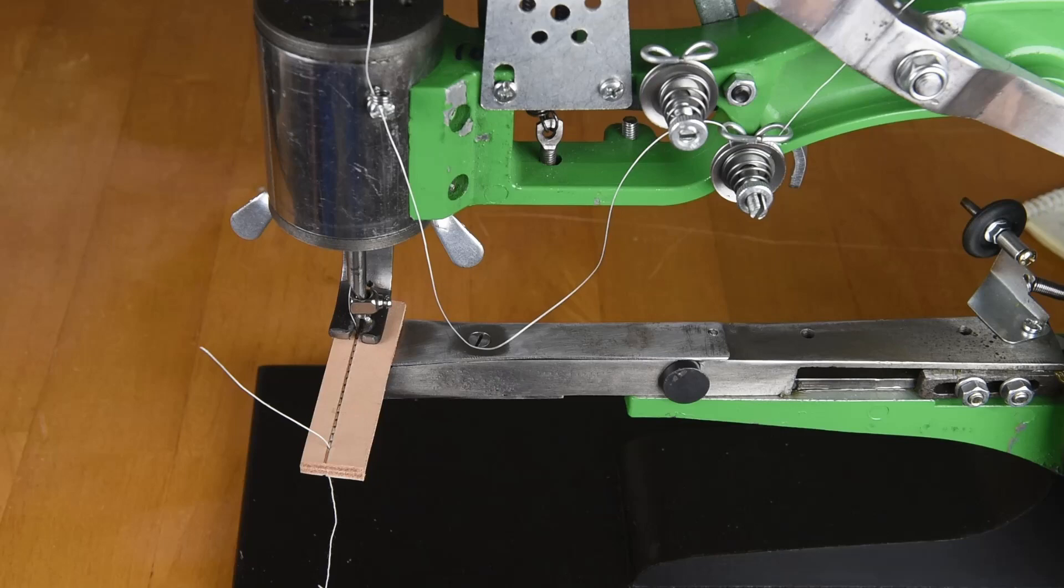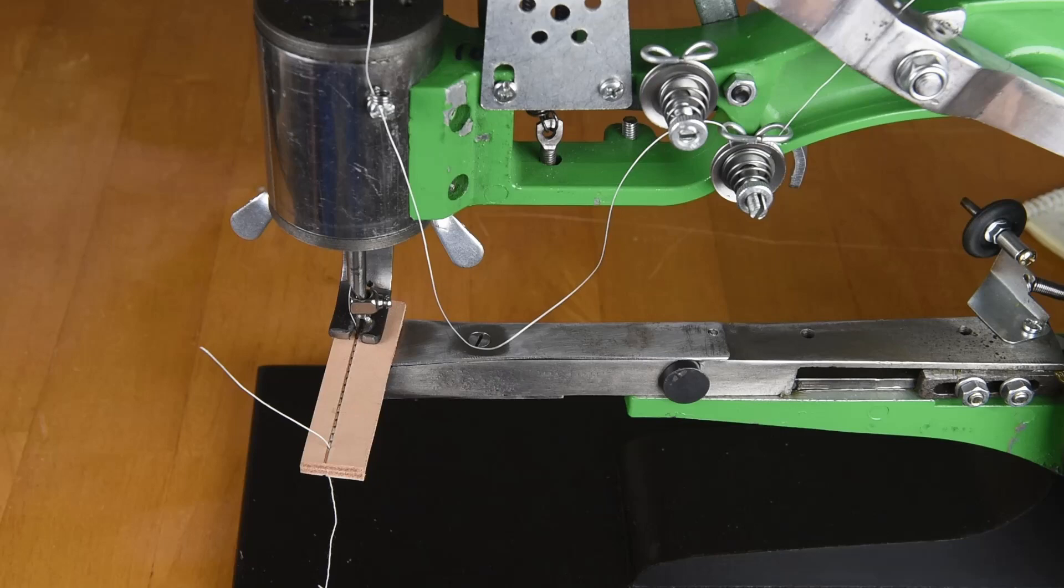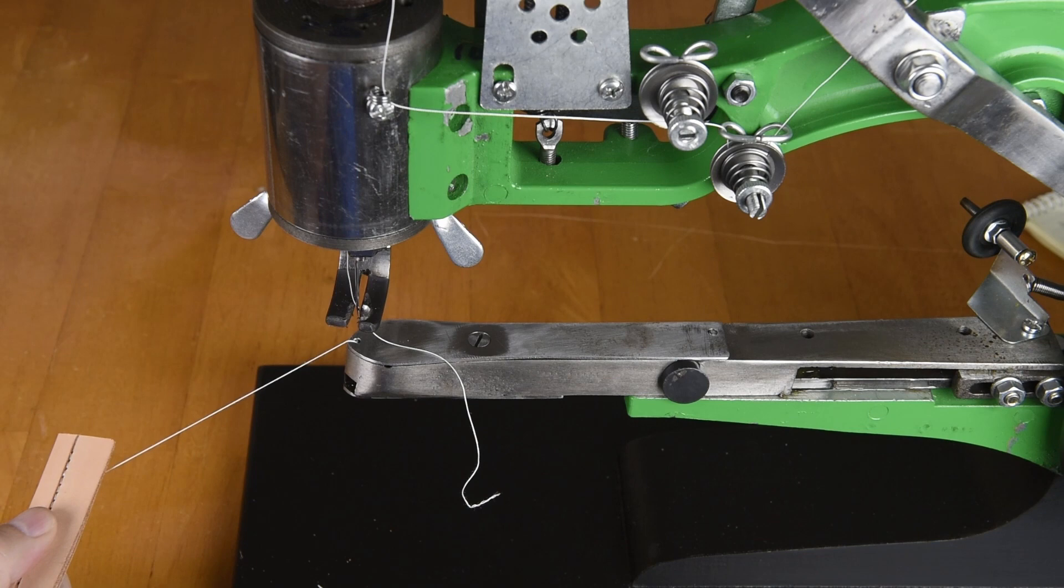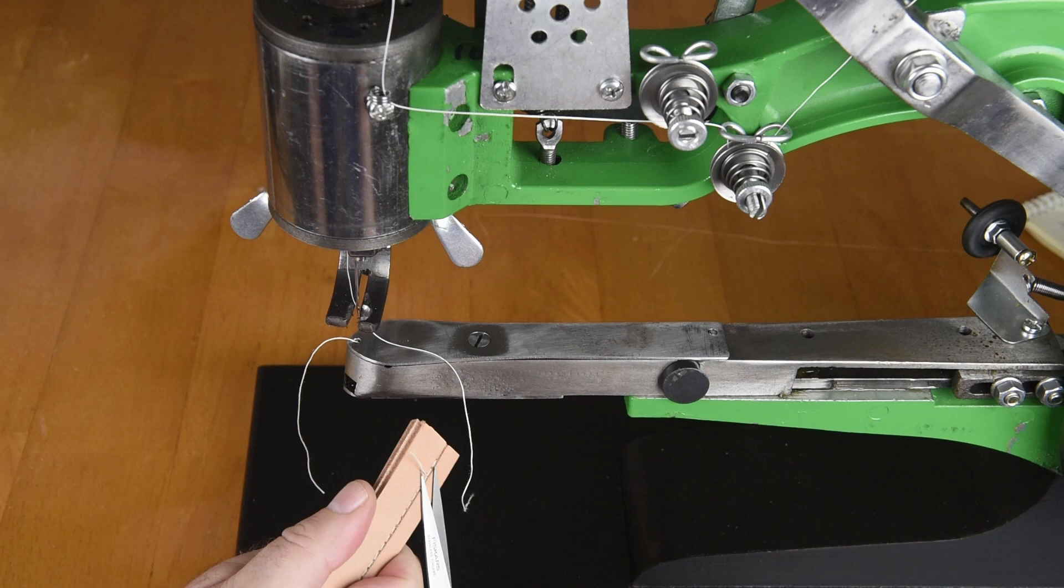Here's something you want to do: whenever you finish a line, just reach up and get some tension to give you some slack in our upper thread. Then we can lift our presser foot and our needle, pull this out and snip our threads. There, as you can see, that's a pretty good looking stitch.